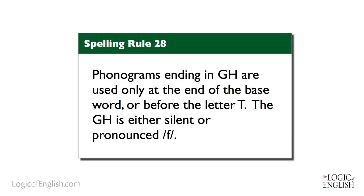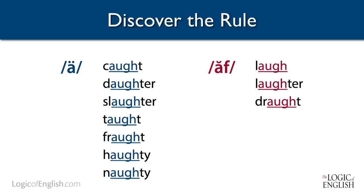This is summarized by the spelling rule: phonograms ending in GH are used only at the end of a base word or before the letter T. Let's test this with another phonogram ending in GH. In 'caught,' 'daughter,' 'slaughter,' and 'taught,' the 'aw' phonogram says 'aw' and is used only before a T. In 'laugh,' 'laughter,' and 'draft,' it's used at the end of the word or before a T.